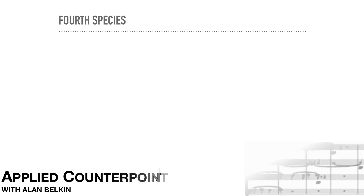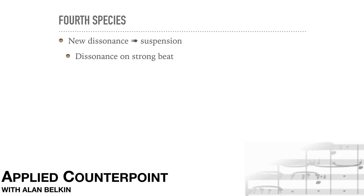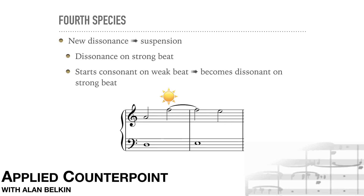4th species introduces a new kind of dissonance: the suspension. Up till now, dissonances have always occurred on the weak beats of the bar, approached and left by step. Suspensions place dissonances on the strong beat for the first time, and their preparation is also handled in a new way. The original idea for the suspension probably comes from vocal writing, where leaping to a dissonance is difficult. But what if the note starts off as a consonance in the previous bar, and then sustained becomes dissonant as the harmony changes around it? This is how a suspension works.